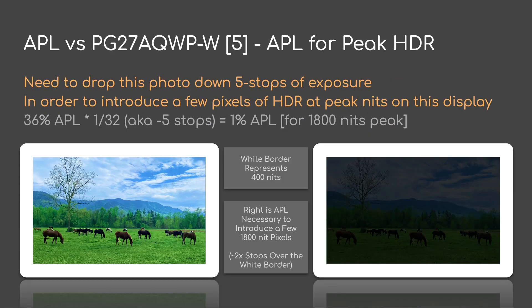In order to get some increased dynamic range, we need to drop this photo down effectively 5 stops of exposure. If we take 36% APL and divide it by 32 — aka 5 stops — we get to that 1% APL area that has an 1800 nits peak. So on the left the white border represents 400 nits, and on the right we have the APL necessary to produce a few pixels of 1800 nits — i.e., those few pixels would be about 2 stops over the white border.